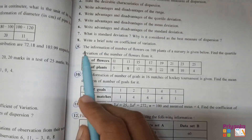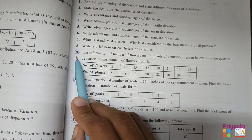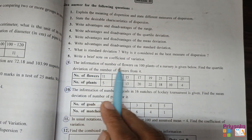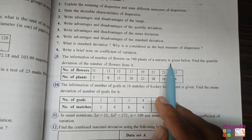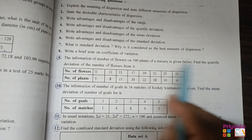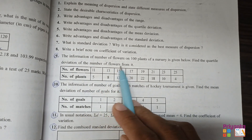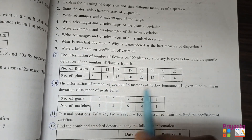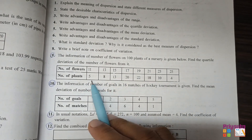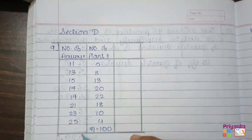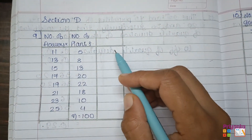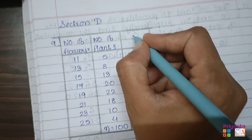Section B starts from page number 167, and here we start the first question out of Section D. The information of number of flowers on 100 plants of a nursery is given below. Find the quartile deviation of the number of flowers. Here the observations and the frequencies are given. First, let's take all the information in the table.